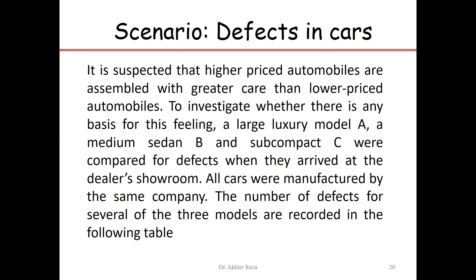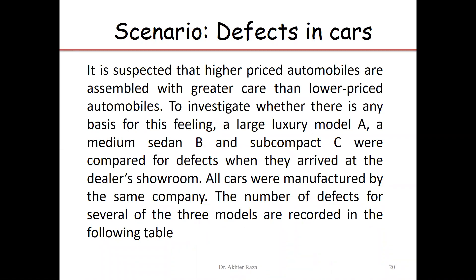The null hypothesis assumes that the mean defects in all three types of models are the same. The alternate hypothesis states that not all three brands have an equal average number of defects in their productions. This complete scenario is considered for the ANOVA technique.